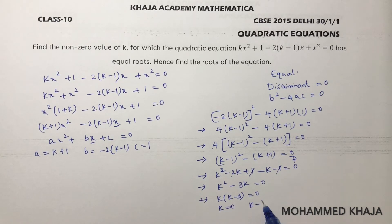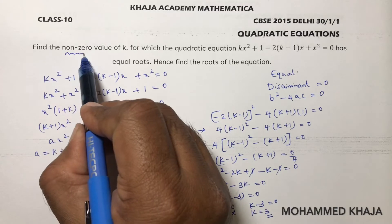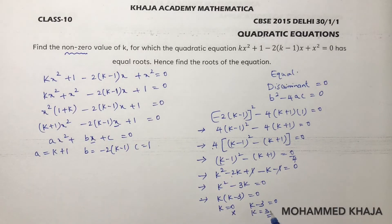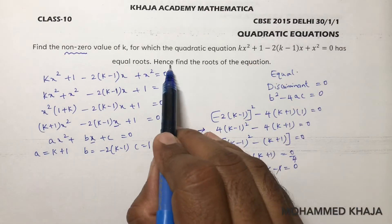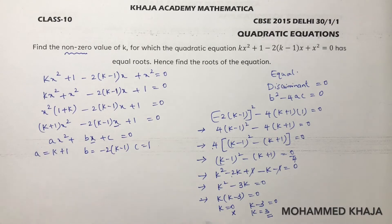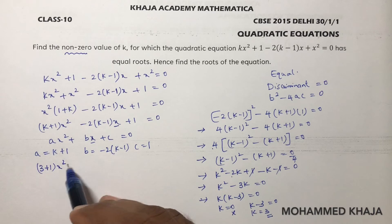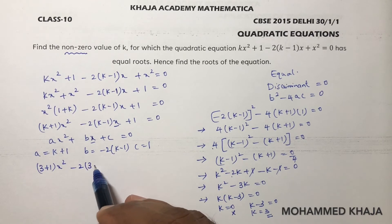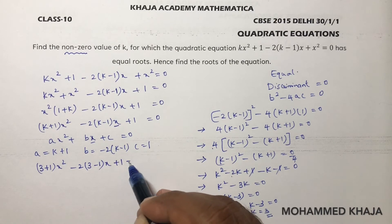Taking k common: k(k-3) = 0, so k = 0 or k = 3. Since the question asks for the non-zero value, k = 3 is the correct answer. Now they are also asking to find the roots of the equation, so substitute k = 3 back into the equation.